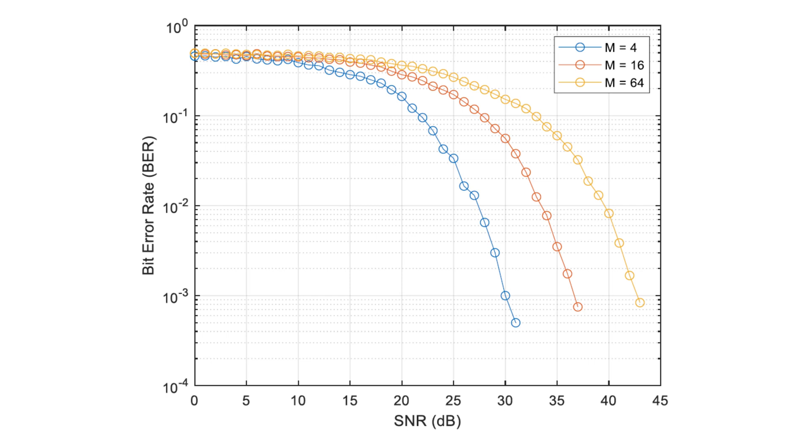The final output includes a plot showing the BER as a function of SNR for each QAM modulation order. This plot is a common way to evaluate the performance of a communication system. The curve should show that as the SNR increases, the error rate decreases, which is in line with theoretical expectations.